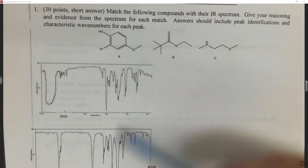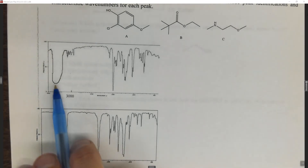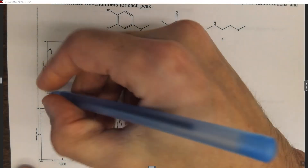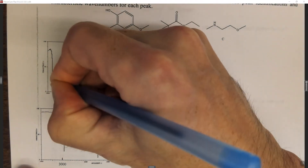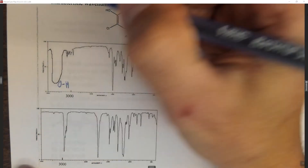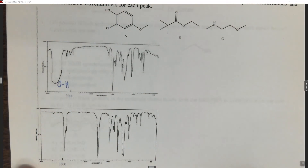The way I would tackle this problem — we have some different compounds and some different IR spectra. The first thing I would say is that we have a broad peak around 3500. This is characteristic of an OH. You're going to have an OH somewhere around 3600 to 3300 cm⁻¹.